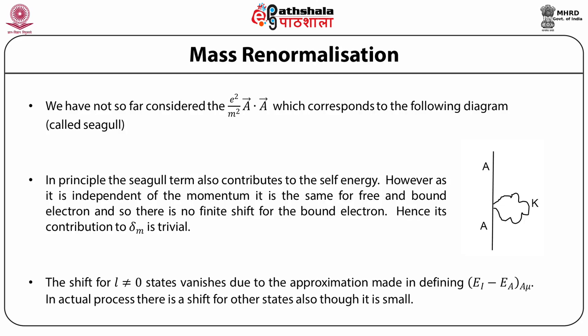The shift for L not equal to 0 states vanishes due to the approximation made in defining |Ei minus Ei| average. In actual process there is a shift for other states also though it is very small.